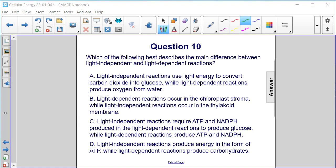C. Light-independent reactions require ATP and NADPH produced in the light-dependent reactions to produce glucose. The light-dependent reactions are the ones that produce the ATP and the NADPH.